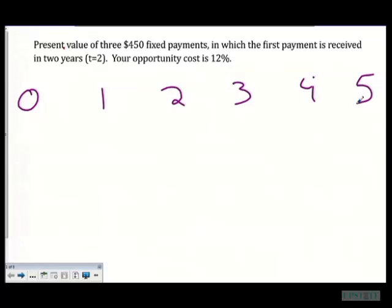First payment is received in two years at T equals two. So that means our first payment is coming here at time period two. We don't have anything coming in year one. We don't have anything coming right now.